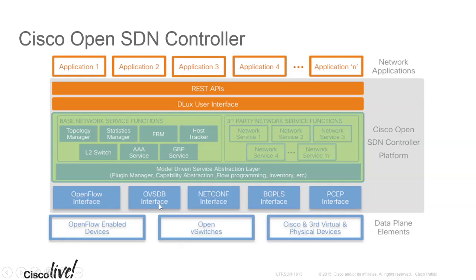On the southbound side, there are various interfaces that communicate with individual network devices, whether those are OpenFlow devices, switches, routers, or whatever the case might be. OpenFlow is typically what most people think of when talking about SDN, but it has grown substantially and there are now a lot more capabilities, especially around Layer 3, where OpenFlow is of course usually talking about Layer 2 switching.